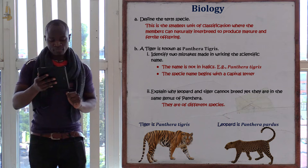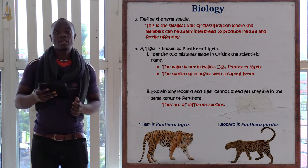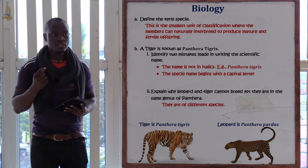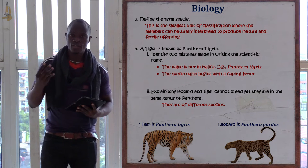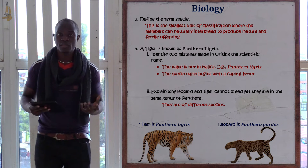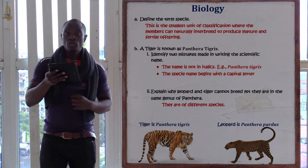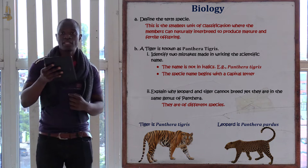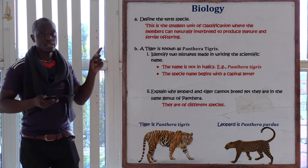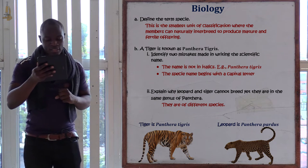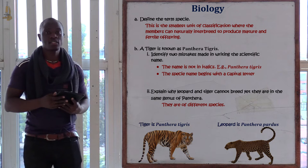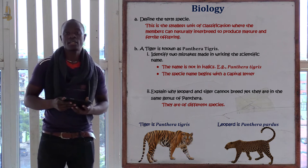The next question asks: define the term species. Species is the smallest unit of classification whereby members can naturally interbreed to give a fertile offspring. In the same question, part B asks: a tiger is known as Panthera tigris — identify two mistakes in writing that scientific name.